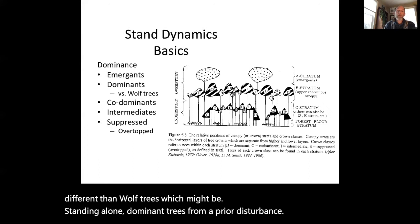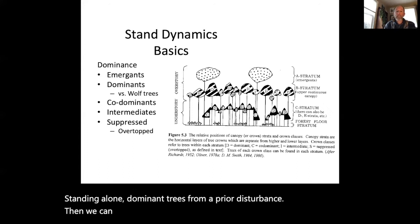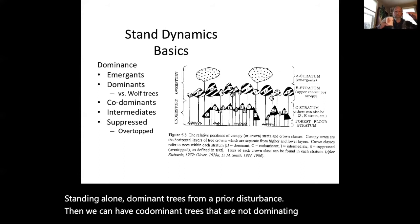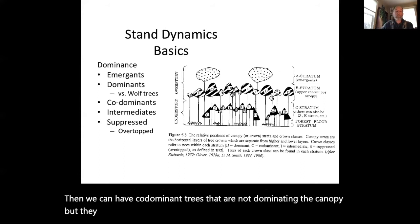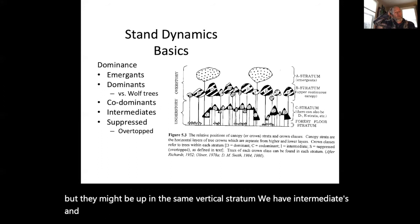Then we can have co-dominant trees that are not dominating the canopy but might be up in the same vertical stratum. We have intermediates, and then we have suppressed or overtopped trees, which are very common in the Pacific Northwest.